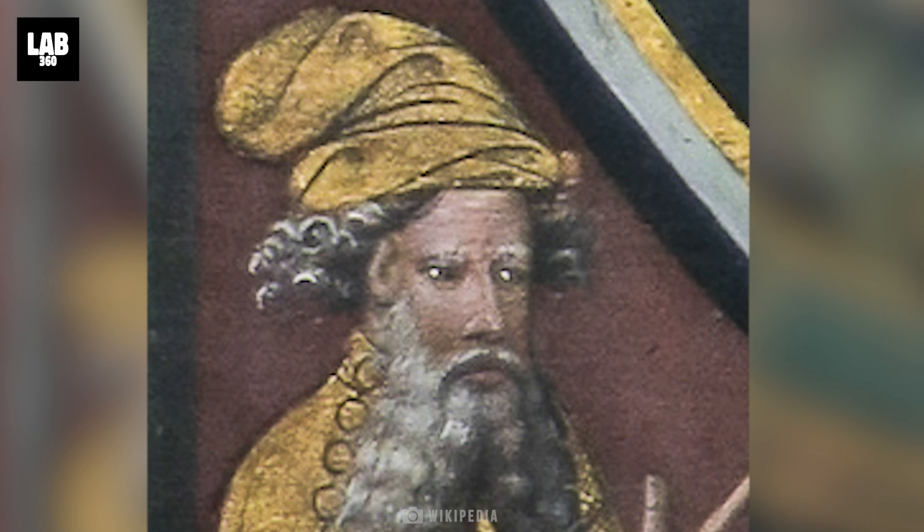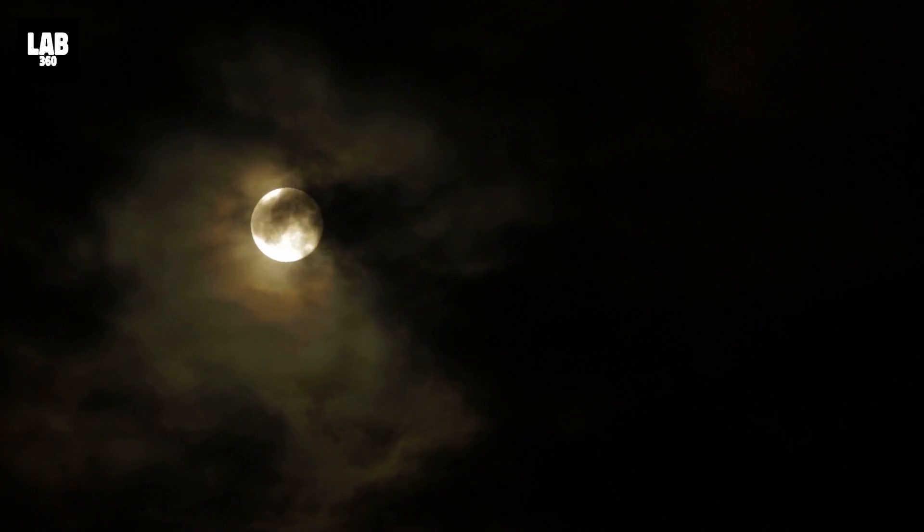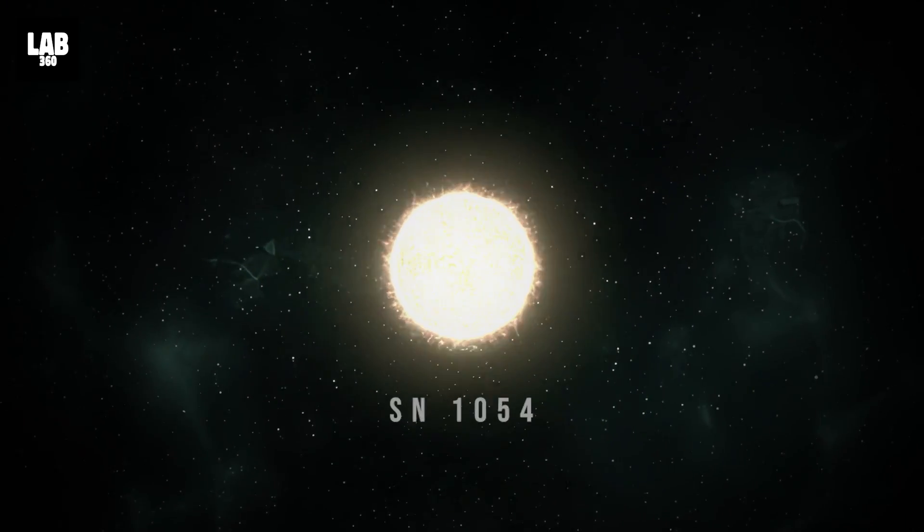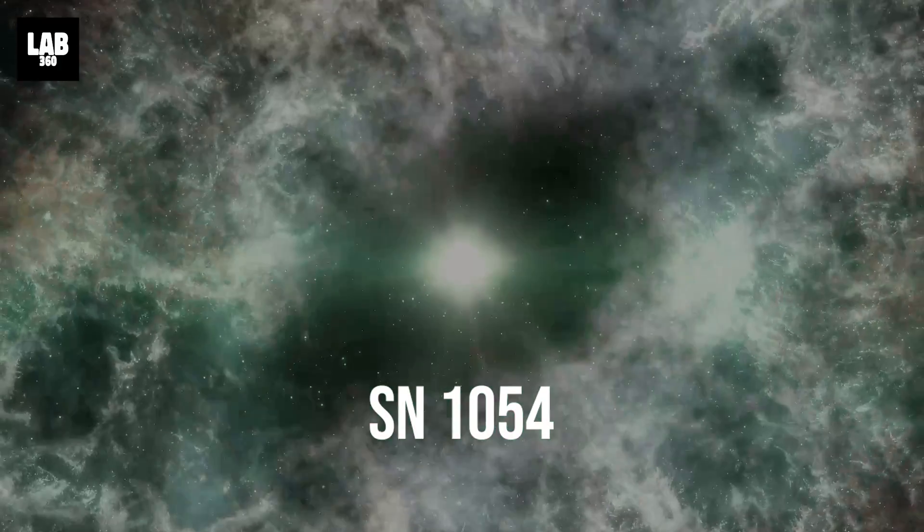Egyptian astrologer Ali ibn Ridwan described the brightness of this star as being one-fourth the brightness of the moon. The next widely observed supernova was SN 1054, which produced the famed Crab Nebula we see today.